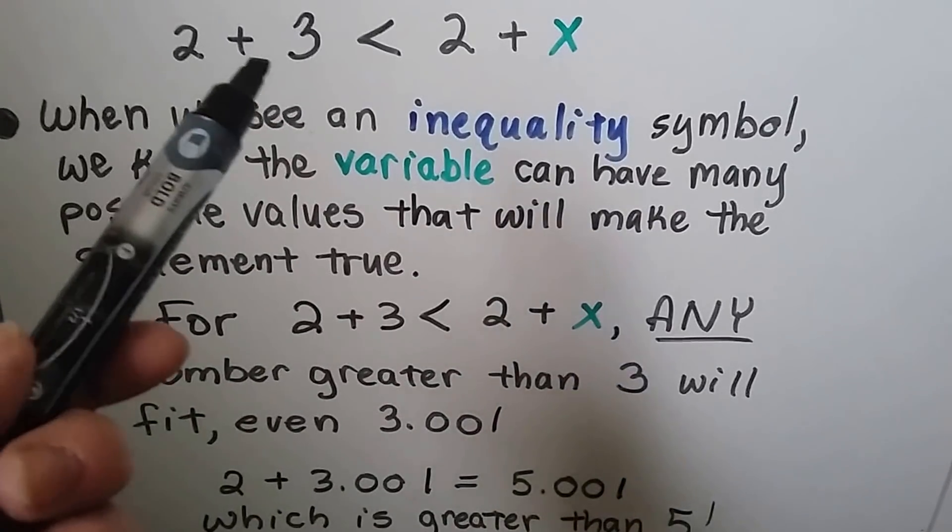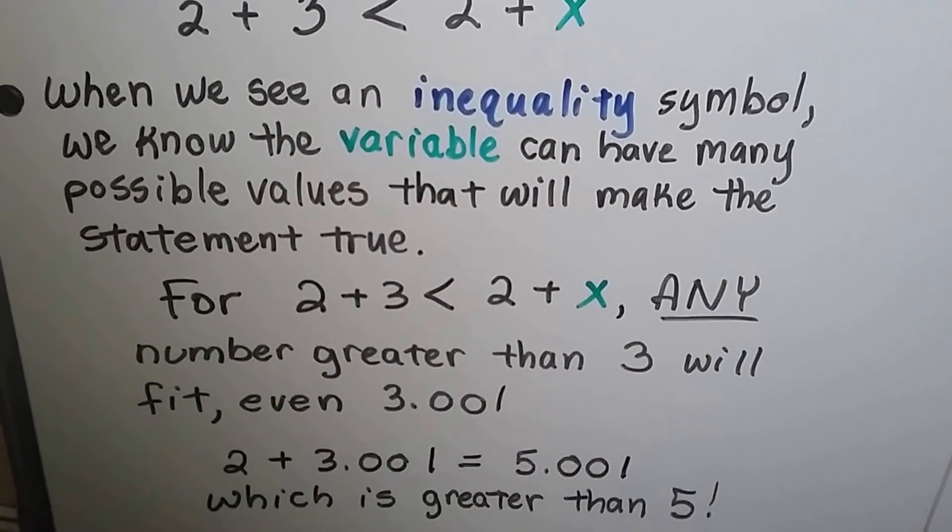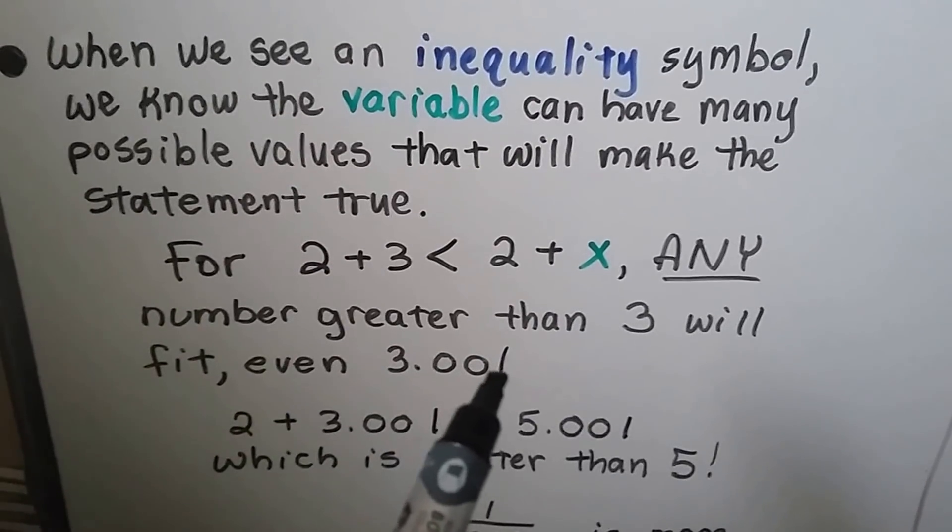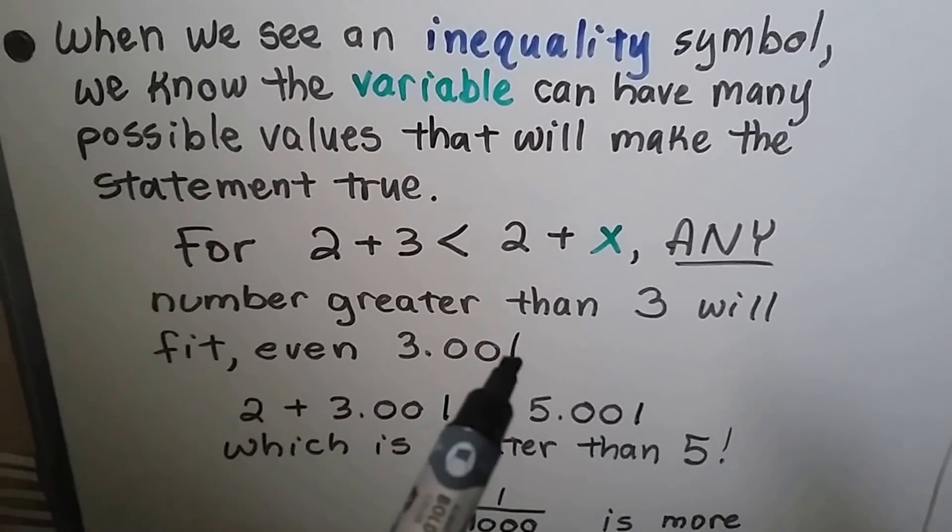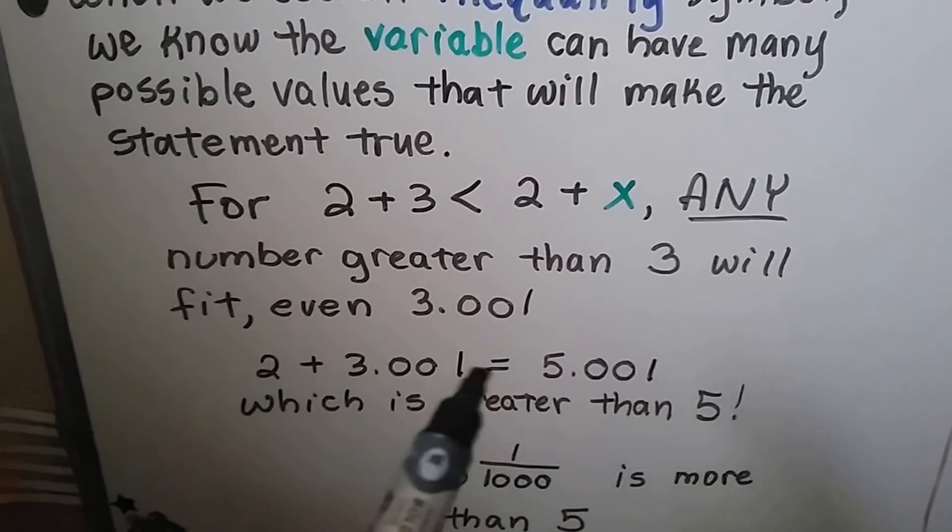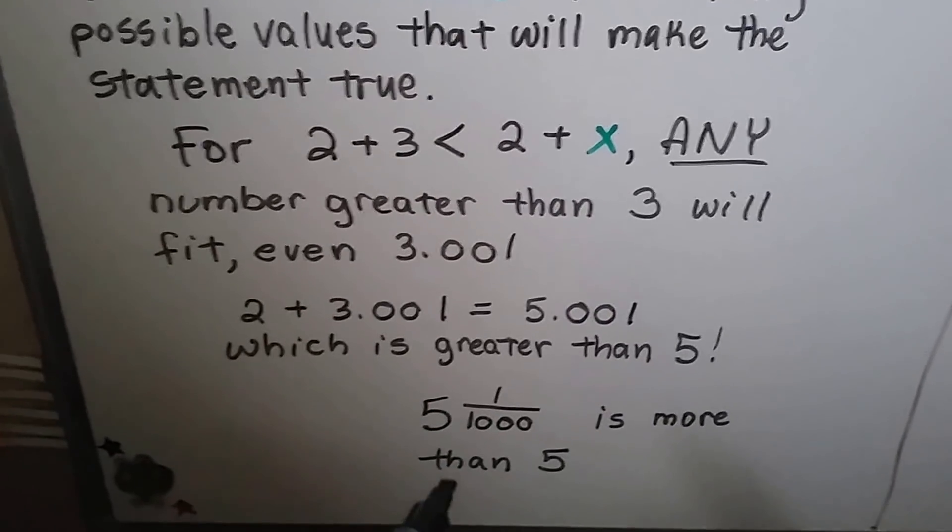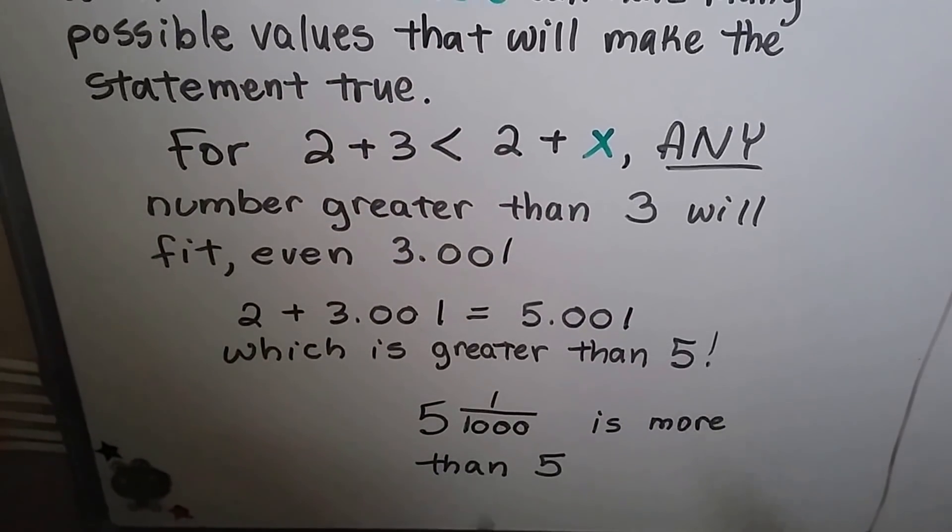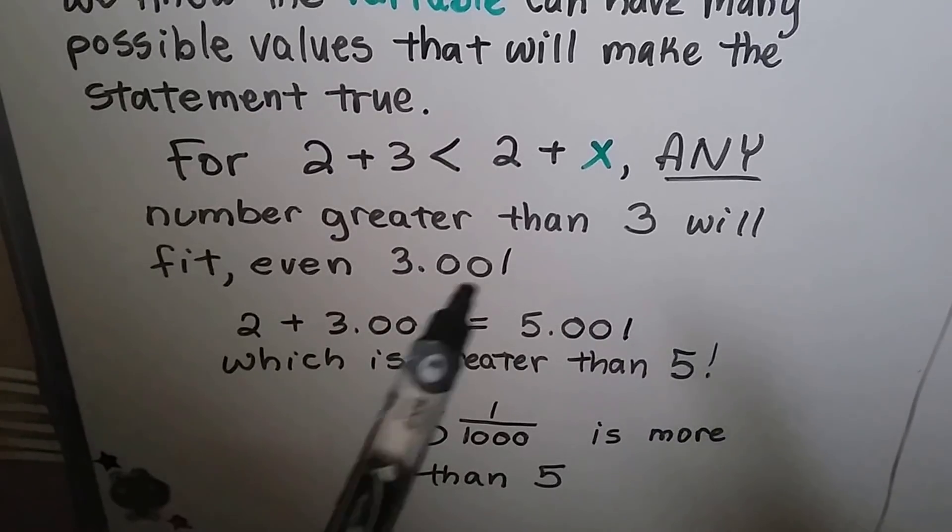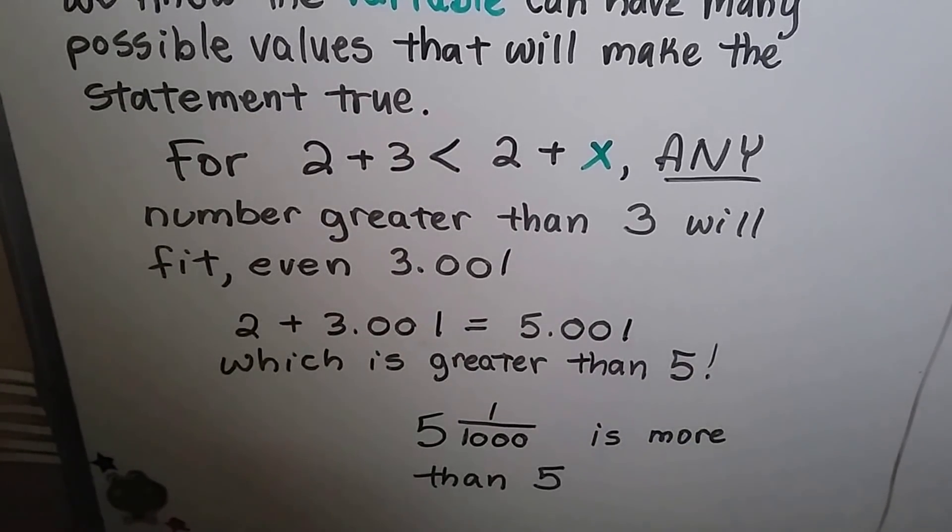So if this is 5, this could be anything added to 2 that would be greater than 5. We could even do 3.001, that's 3 and 1 thousandth. If we add 2 to 3 and 1 thousandth, we have 5 and 1 thousandth. That's greater than 5. It's more than 5 by that 1 thousandth. We could even do several zeros and a 1. It would still be bigger than 5 by itself.